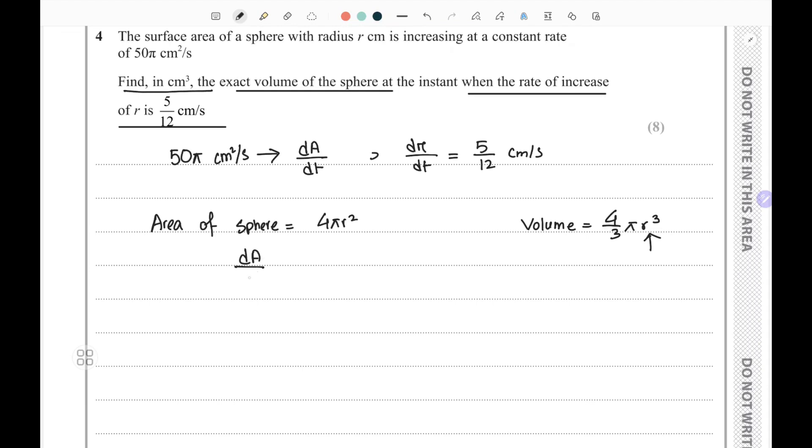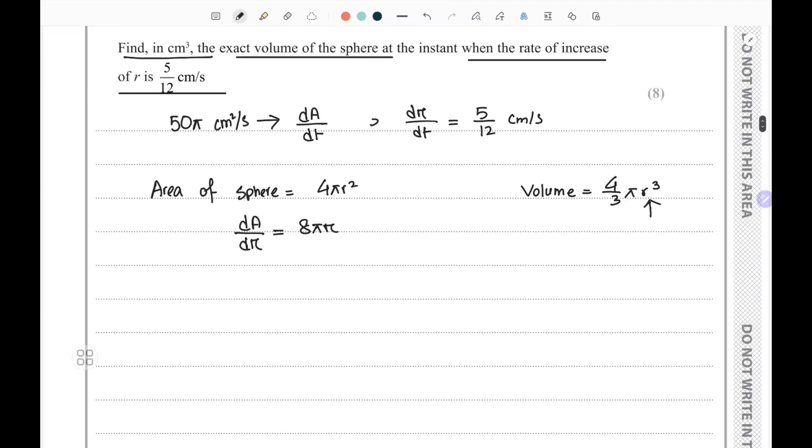If I rearrange this dA/dr and use our information, I'm going to get dA/dt multiplied with dt/dr.